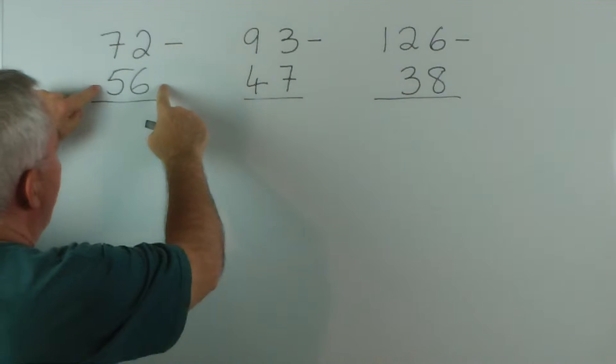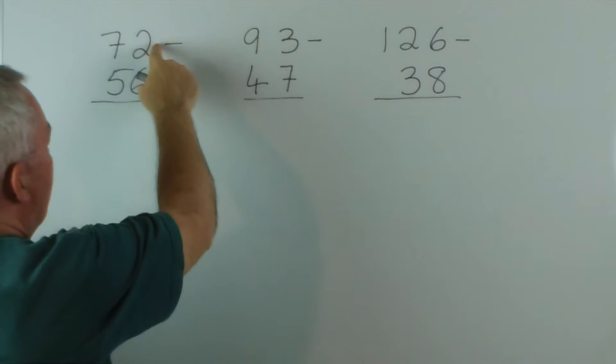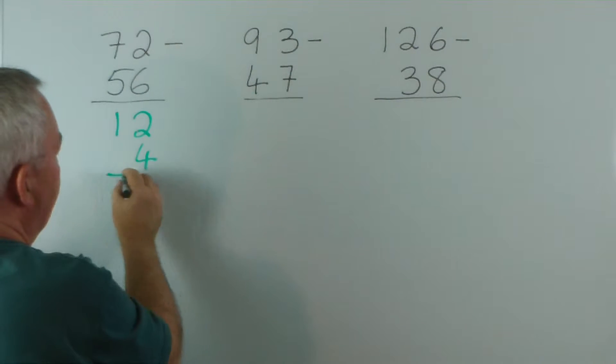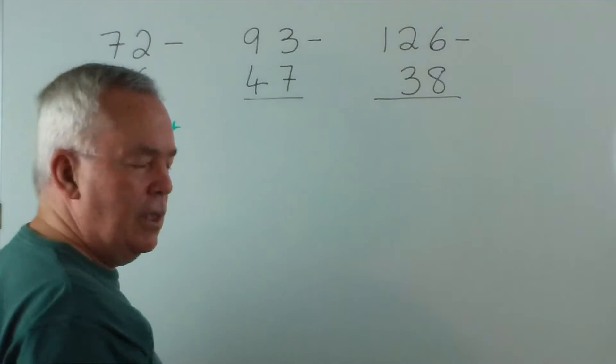So here for example, 56, we would round that up to 60, and perform 72 take away 60 is 12, and then the difference of 4 we would add on afterwards. So this would become an addition.